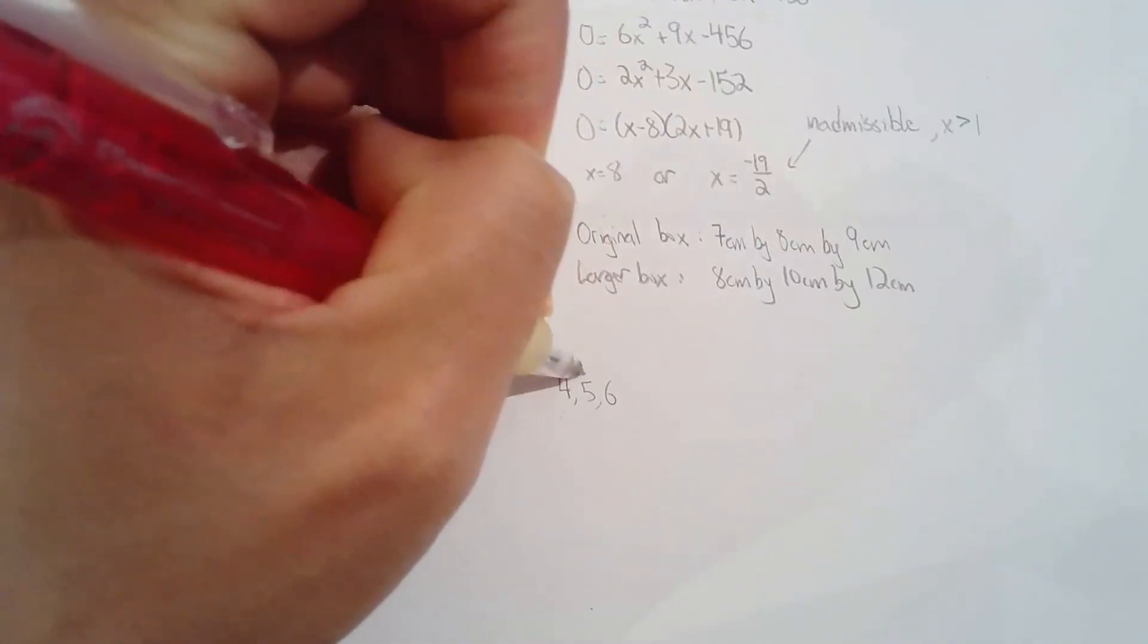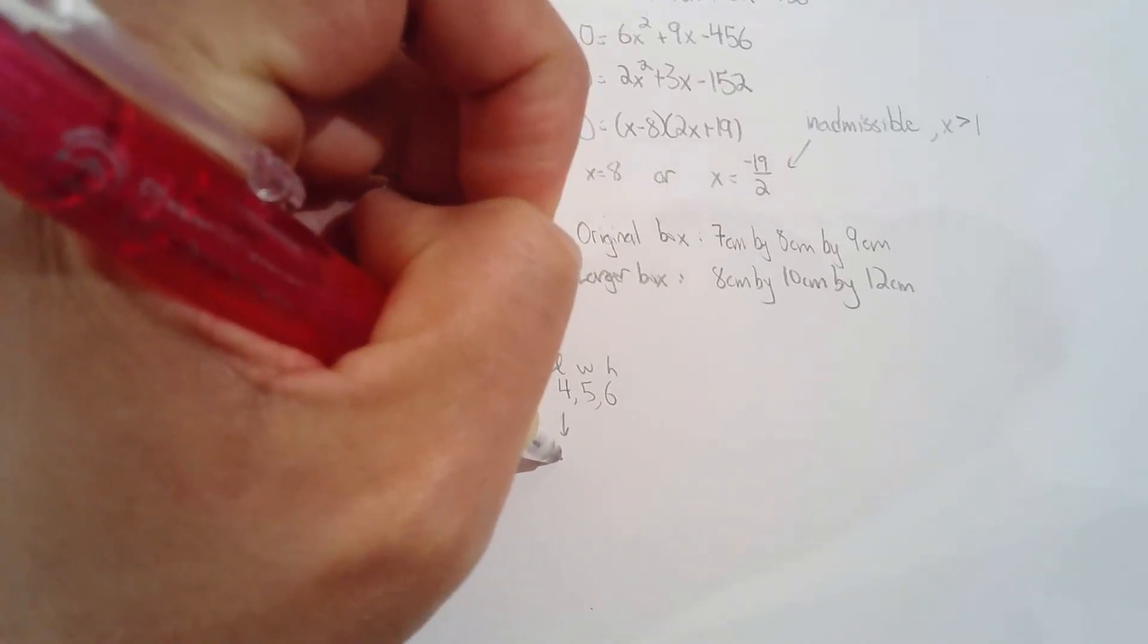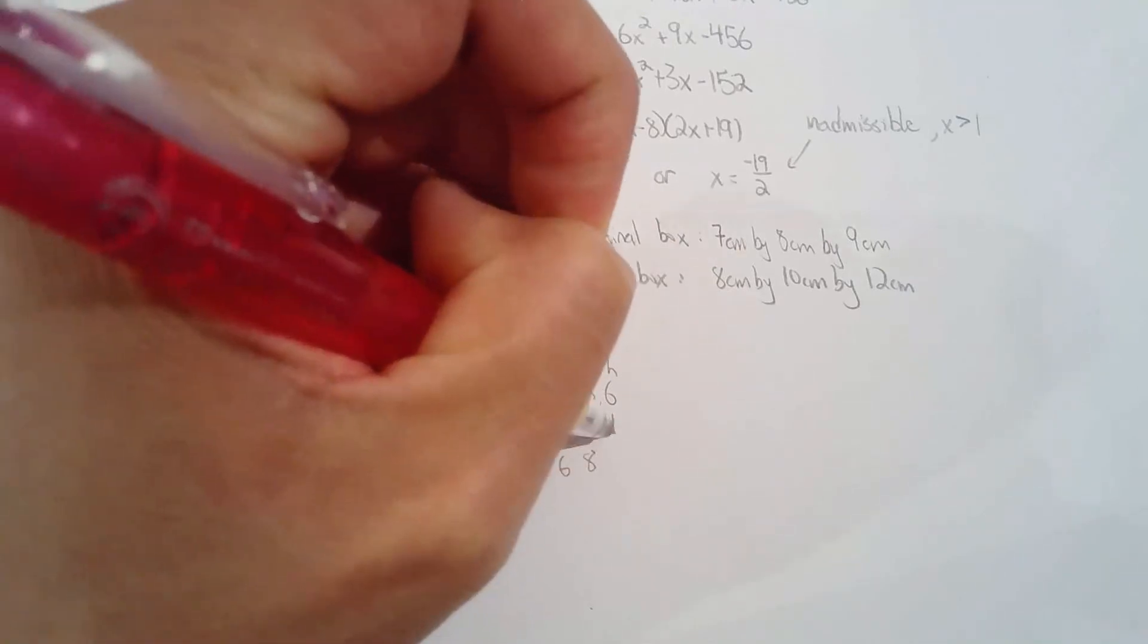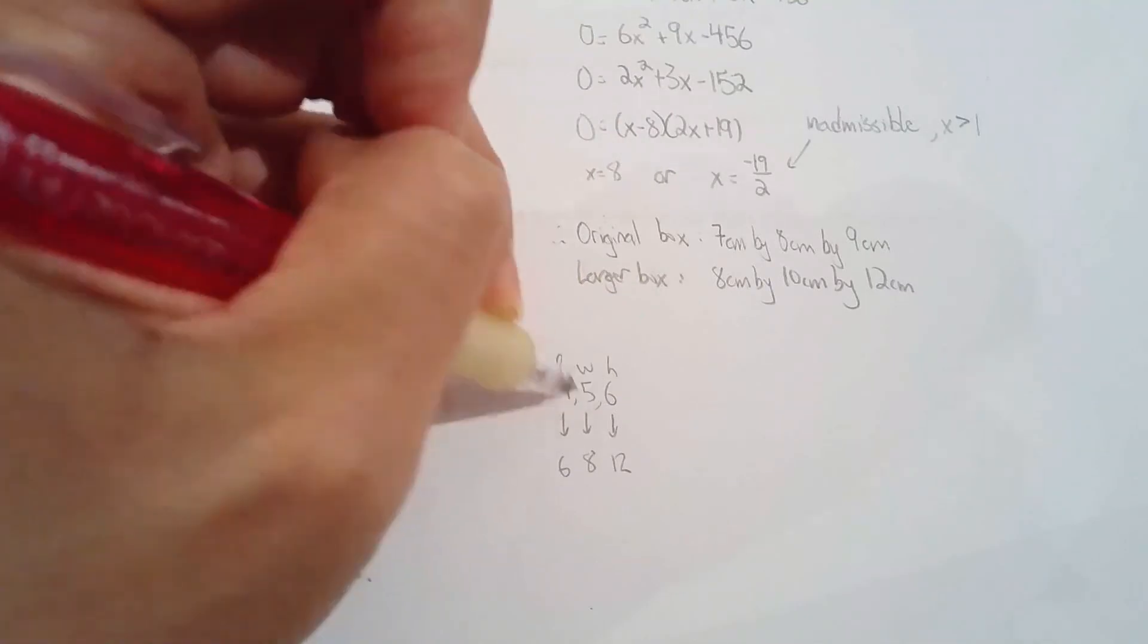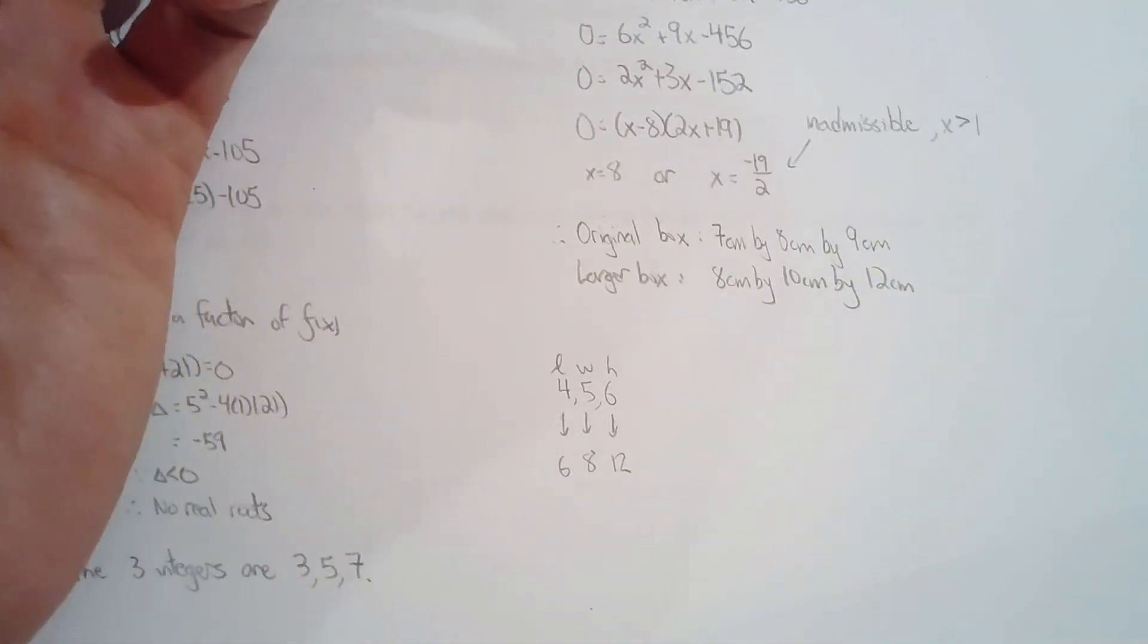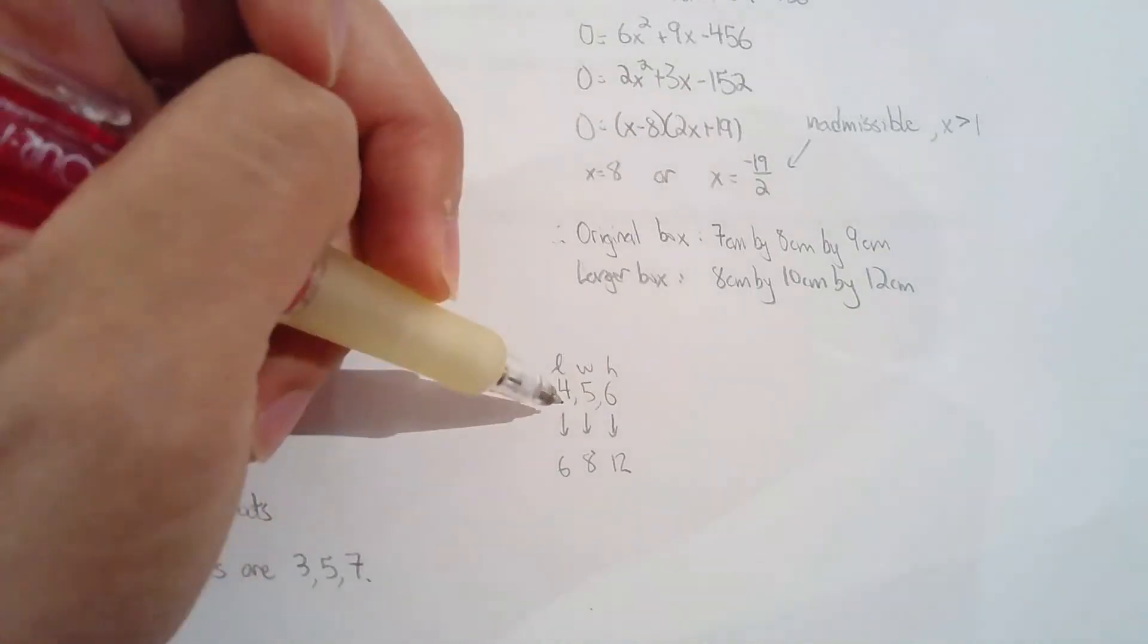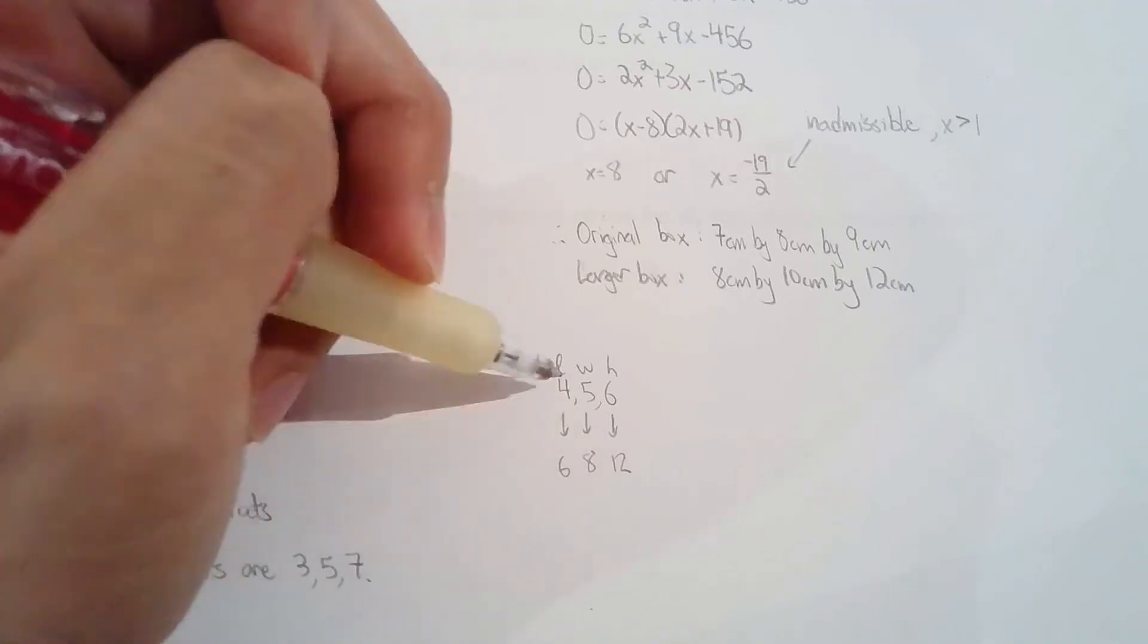So you take the length and increase that by 2 centimeters. And then the width increase it by 8 centimeters. And take the height and say you double it. Obviously, you don't tell your friend what the numbers are. That would give the answer away. So you tell them that the original box is three consecutive integers.